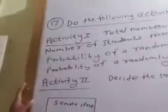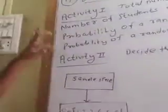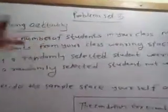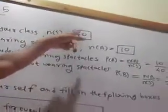Question number 17. Do the following activity. Two activities are given. I take my number itself. You can take the number of students in your class. Activity first. Total number of students in your class. I take N(S) is equal to 40.